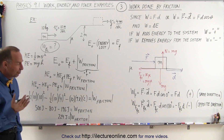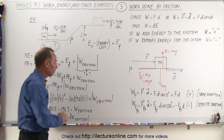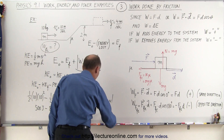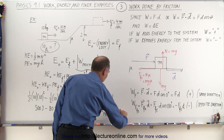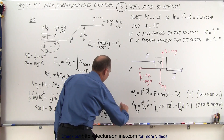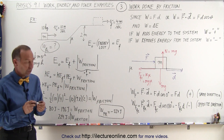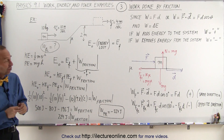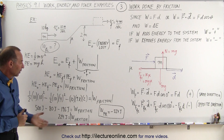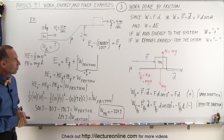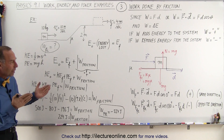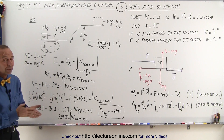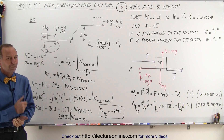That is the absolute value of the work. Since friction does negative work, the work done by friction is equal to minus 224 joules. Work done by friction must be a negative quantity. That's how we define the work done — either as force times distance or as a change in energy.